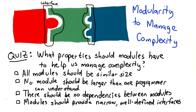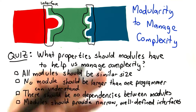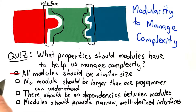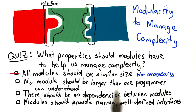So this quiz was probably a little tricky to answer based on just what I've told you so far. And the picture might be a little deceptive, but I hope you thought about this from the perspective of constructing a program. The answer that I think is correct is that it's not the case that all modules should be of similar size. It's okay if they are, like shown in the picture, but this shouldn't be a big design constraint.